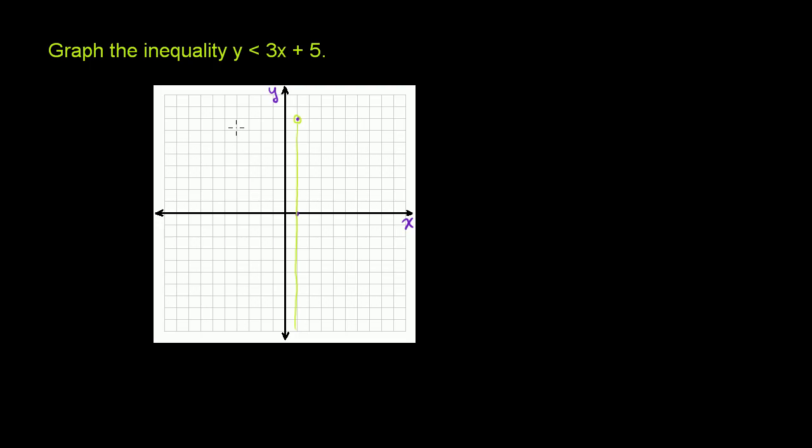So we know how to graph just y is equal to 3x plus 5. Let me write it over here. So if I were to write y is equal to 3x plus 5, we'd say, OK, 3 is the slope, slope is equal to 3. And then 5 is the y-intercept.